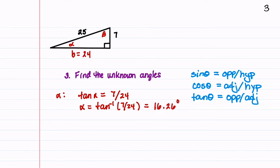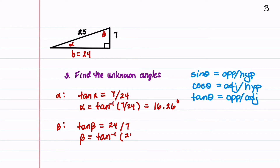Now we find beta using tangent again: tangent beta equals 24 over 7, so beta equals inverse tangent of 24 over 7, which gives 73.74 degrees. A nice built-in check is that alpha and beta must add up to 90 degrees — and indeed 16.26 plus 73.74 equals 90 degrees.